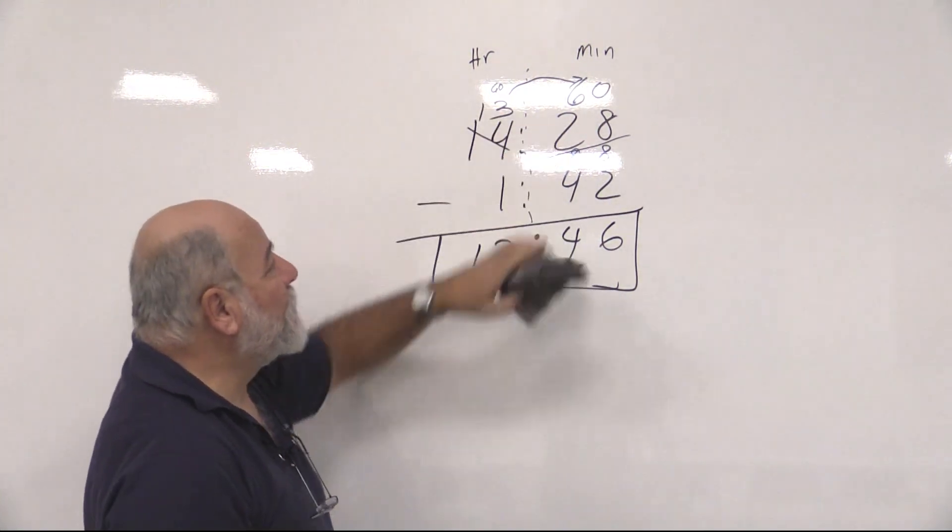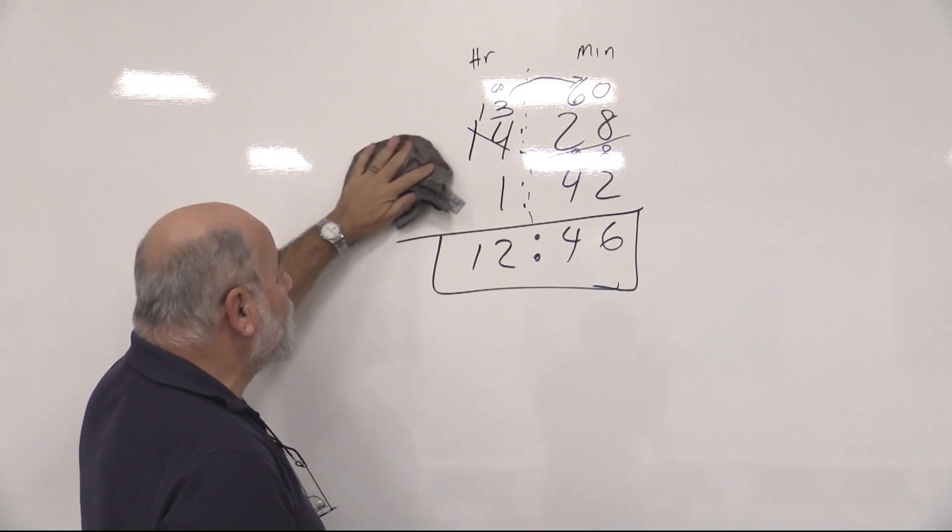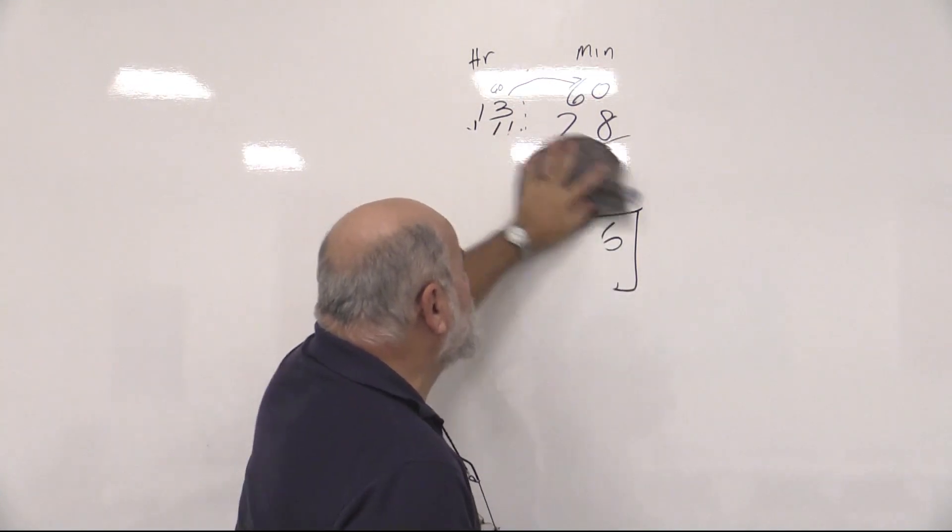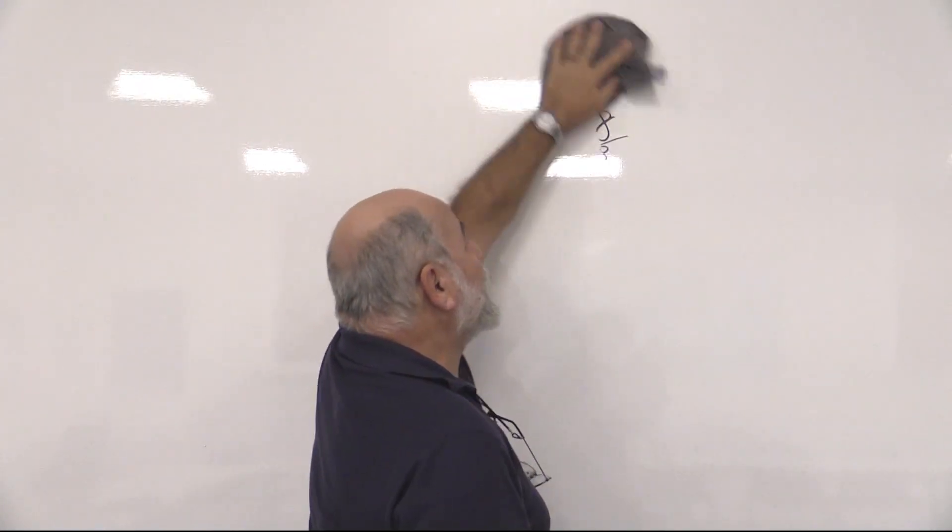You cannot do time math on your calculator. You have to do time math on paper. You have to use the old style math. So let's see what happens with a typical Coast Guard question.